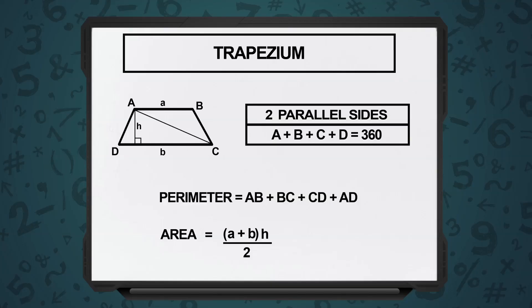Therefore, area of a trapezium is half into A plus B, the sum of the two parallel sides, into height H.